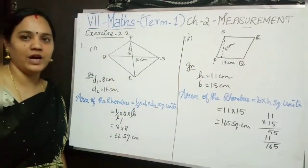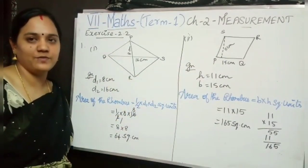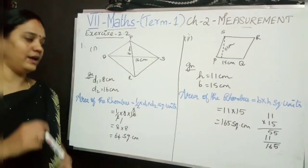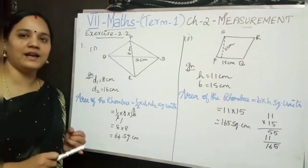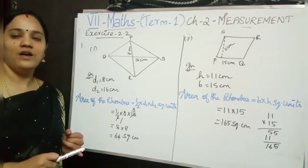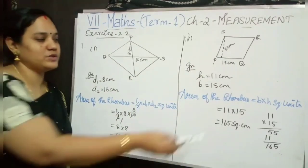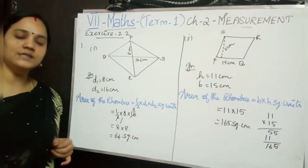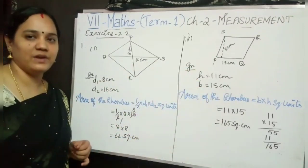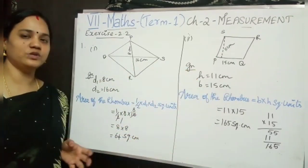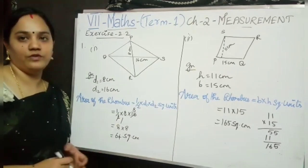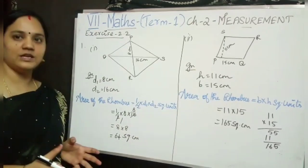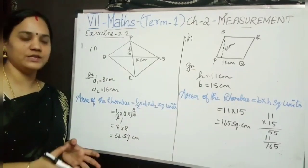Already I explained you that we have two formulas for area of the rhombus. If base and height are given, we have to use base into height formula, or else if diagonal is given, we have to use half into D1 into D2 formula. So here also I am going to follow the same thing.